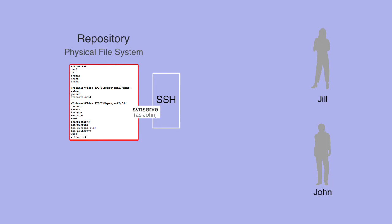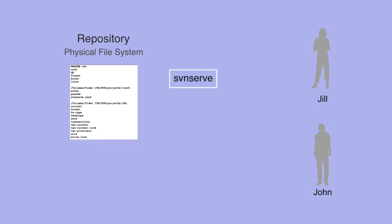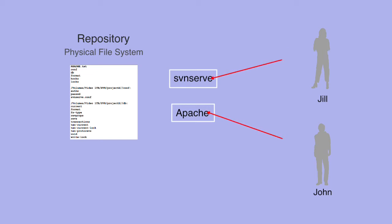If you use either the SVN serve or Apache servers, you will want to secure your repository file system, allowing only the server program and the subversion administrators to access these files.